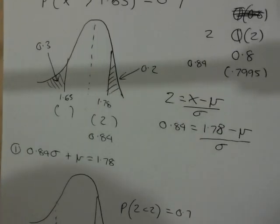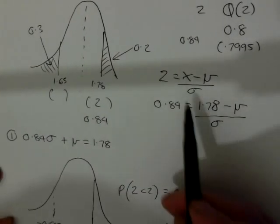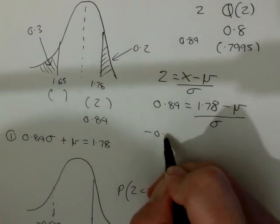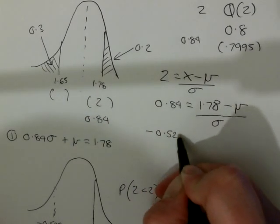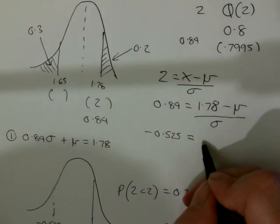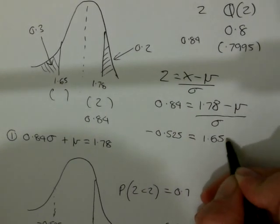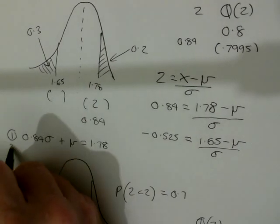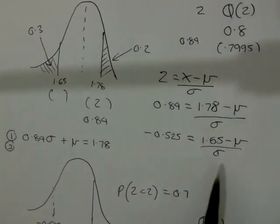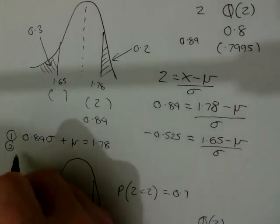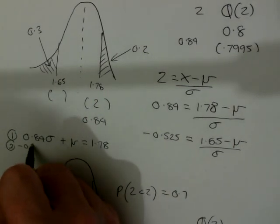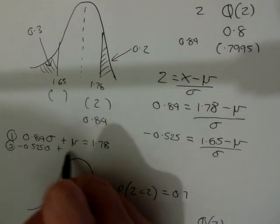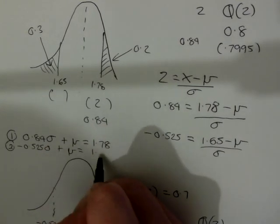So, we can then do as we did before. I'm going to say minus 0.525 equals 1.65 minus mu over sigma. I'm now going to form my second equation, and that will be minus 0.525 sigma plus mu will equal 1.65.